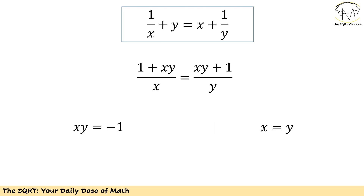Let's focus on one of these equations: 1 over x plus y equals x plus 1 over y. We can simplify it — on the left-hand side we have 1 plus xy over x, and on the right-hand side xy plus 1 over y. Obviously there are two solutions: x equals y, or xy equals negative 1.